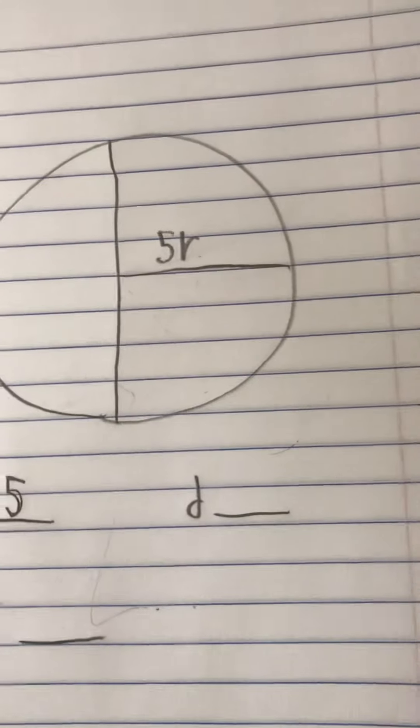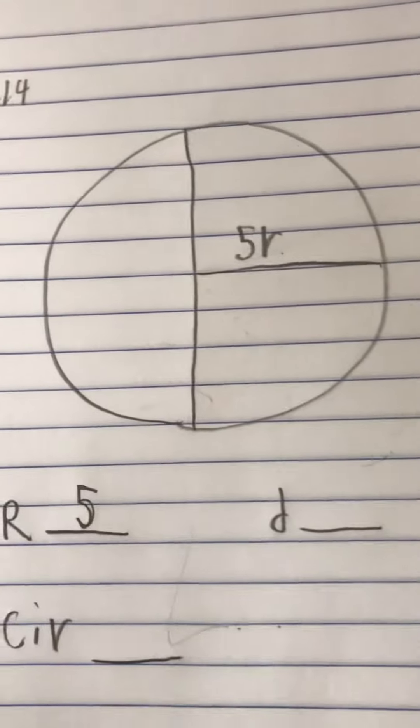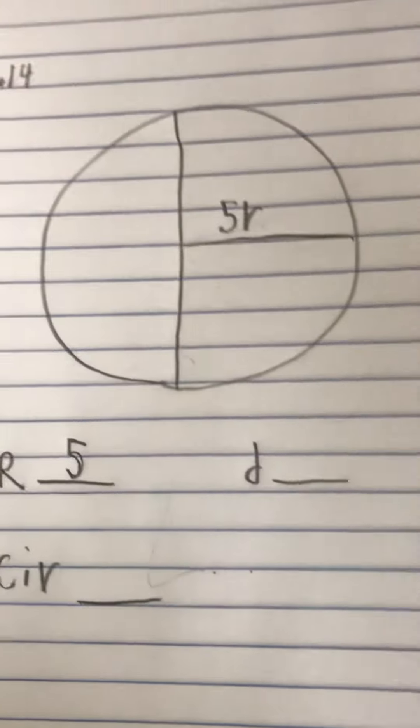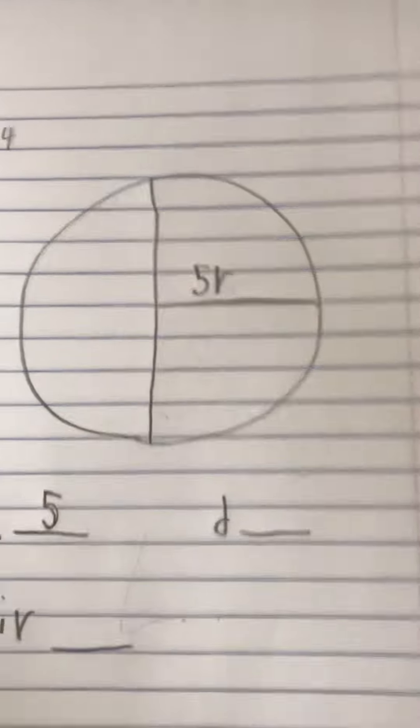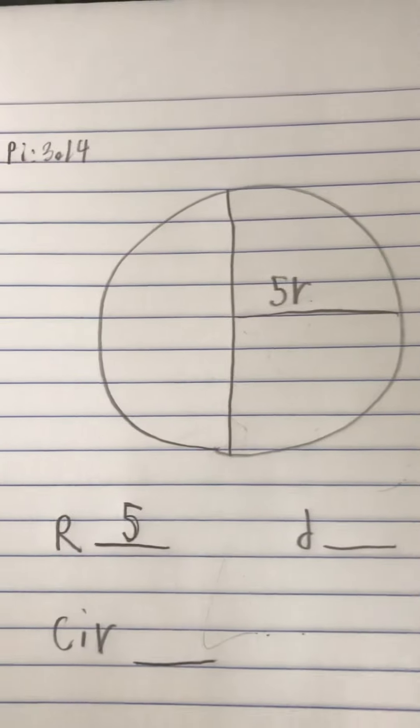So in this case, R is 5. So 5 times 2 is 10. So that means 10 would be our diameter.